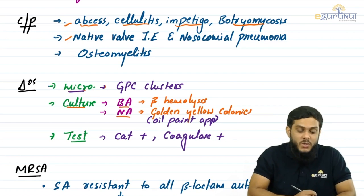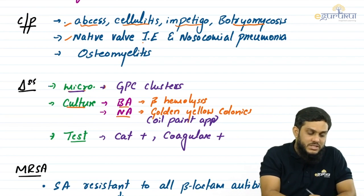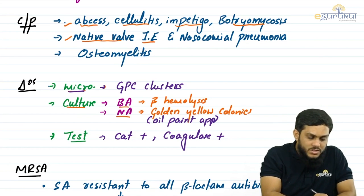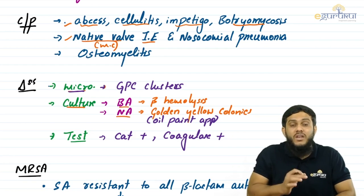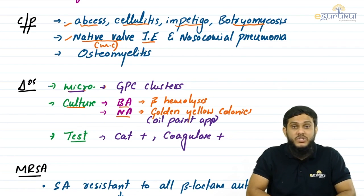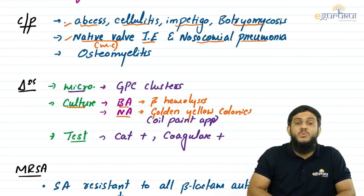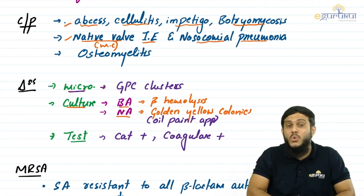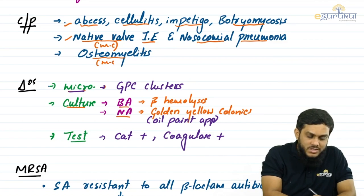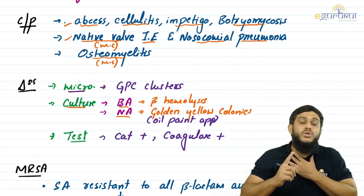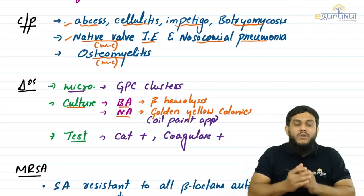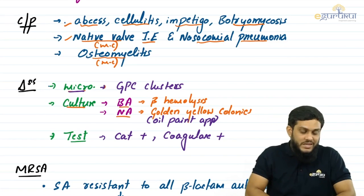Along with skin and soft tissue, staphylococcus aureus can also involve the cardiovascular and respiratory systems, causing infective endocarditis. Staphylococcus aureus is the most common cause of native valve infective endocarditis. It is also responsible for hospital-acquired pneumonia (nosocomial pneumonia). Additionally, staphylococcus aureus is the most common organism causing osteomyelitis.